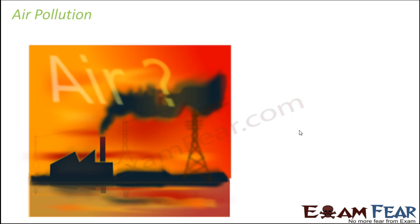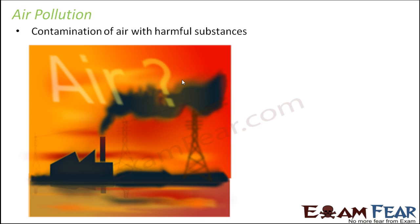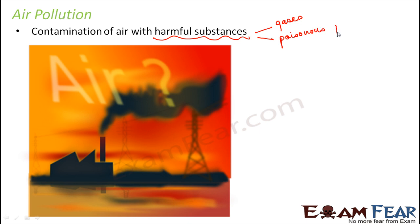So what is air pollution? Contamination of air with harmful substances — when air gets mixed up with some harmful substances. These harmful substances could either be some harmful gases, some poisonous chemicals or particles, or even some biological molecules which, when present in excess amounts, can be harmful for life forms. Any of these harmful substances getting mixed up in the air pollutes the air, or kind of makes the air dirty.